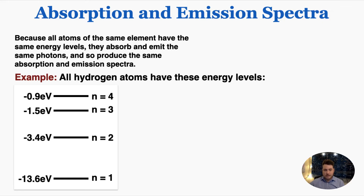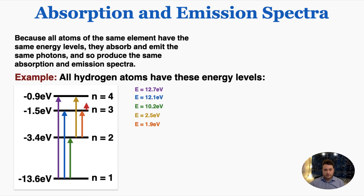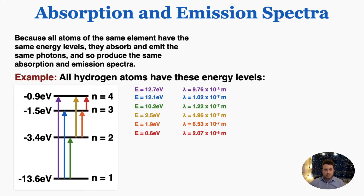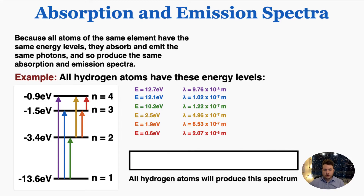Because all atoms of the same element have the same energy levels, they absorb and emit the same photons, producing the same absorption and emission spectra. As an example, all hydrogen atoms have the same energy levels. Running through all the possible energy changes and using the equation to find the wavelengths, I get these values. If I fill in an absorption or emission spectrum using these wavelengths, it looks something like this — not drawn exactly to scale — and every hydrogen atom will always produce the same spectrum with wavelengths in the exact same spots.